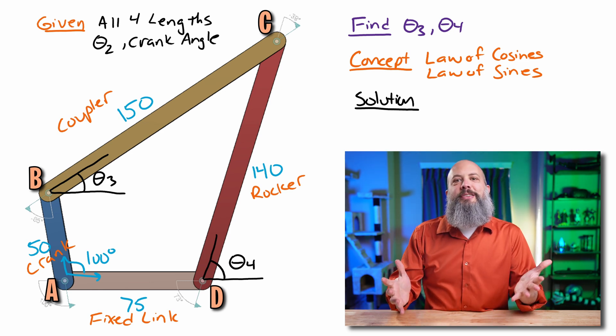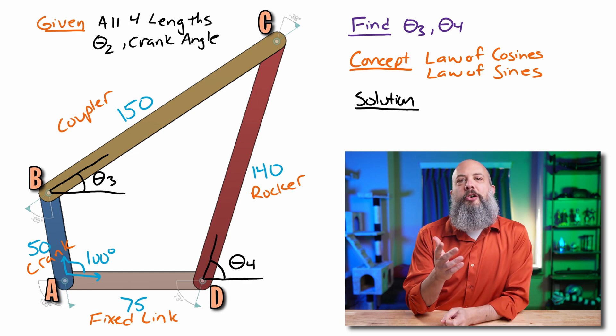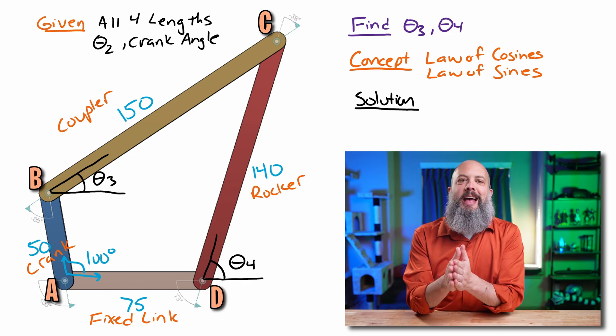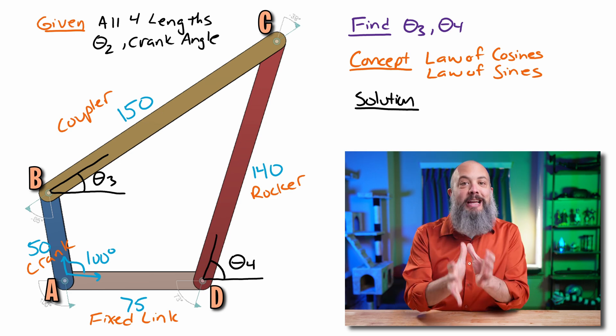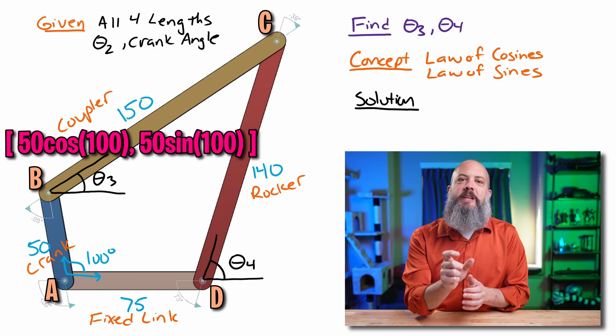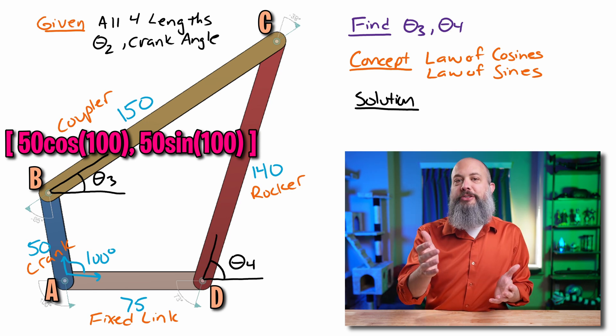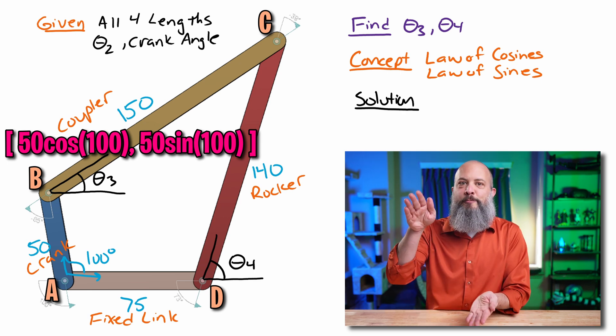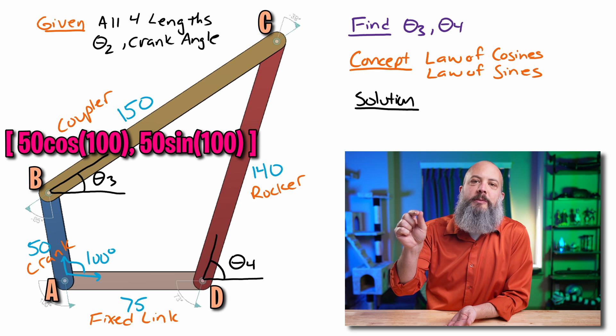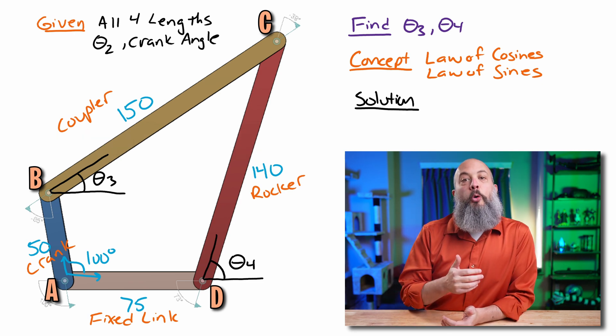Posture analysis, position analysis is just using regular sine and cosine, so if I wanted to call the origin here at ground, at point A, then I could say that point B's x-coordinate is at 50 cosine 100 and its y-coordinate 50 sine 100. We can just use sine and cosine along with the length to find the location of point B, and we could even go a step further and then find point C.